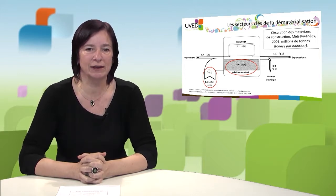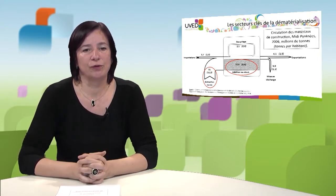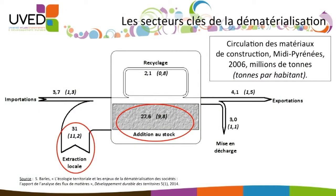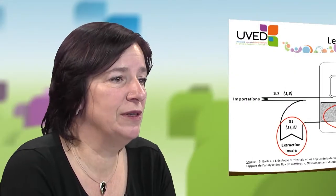How can we go further and find new options to dematerialize? Let's take a look at the circulation of construction materials in Midi-Pyrénées, in the south of France, where the graph showed very high levels. It shows the consumption in million tons and tons per inhabitant. To the left we see the inputs of materials, and we observe that Midi-Pyrénées is a region almost autonomous in terms of construction materials because local extraction covers most of its needs. For outputs, there are very few exports.